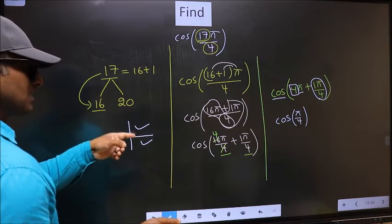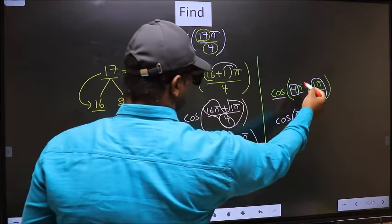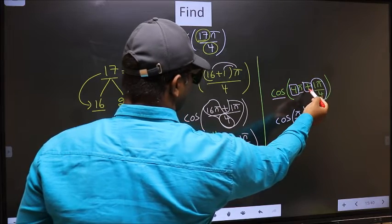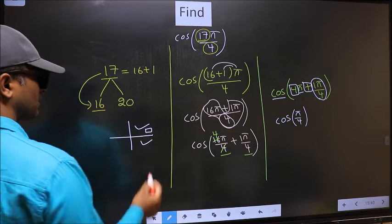So now to check in which quadrant do they lie? For that, look at this symbol. Here we have plus. So the angle lies in the first quadrant.